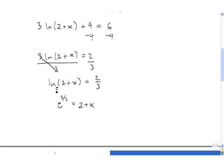So this guy e raised to this guy on the other side equals this. This to this is this. The next thing we need to do is subtract 2 from both sides to finish isolating x. So the left hand side becomes e^(2/3) minus 2 equals x.